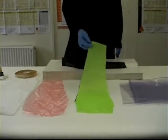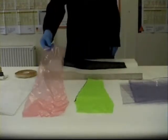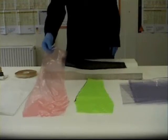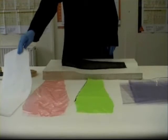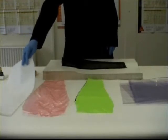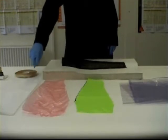If we're vacuum bagging, then we need peel ply, a release film which is either perforated or non-perforated, a breather or bleeder fabric. It actually uses both effects: the air comes through it and also it'll absorb any excess resin.